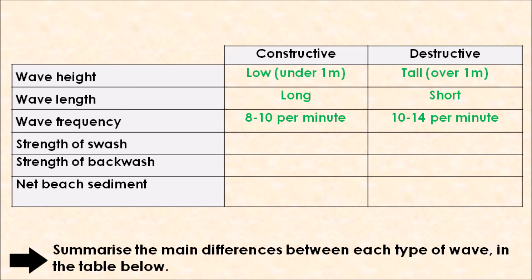When we're thinking about the strength of the swash, our constructive waves have the strongest swash, and your destructive wave has the weakest swash because it needs more energy to generate that wave height. For the strength of the backwash when the wave retreats from the coastline, constructive waves have weak backwash, and the strongest backwash is associated with destructive waves because they cause erosion.